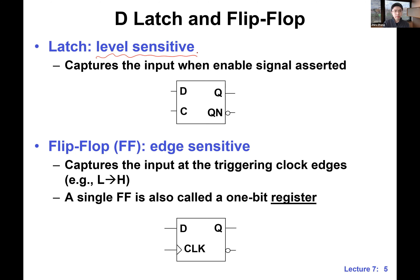For a flip-flop — let me ask: what is a D flip-flop made of? How many latches do we need in a D flip-flop? Two. Very good — there are two D latches back-to-back, which gives us this very interesting edge-sensitive behavior. It captures the input right at the rising edge or triggering edge.